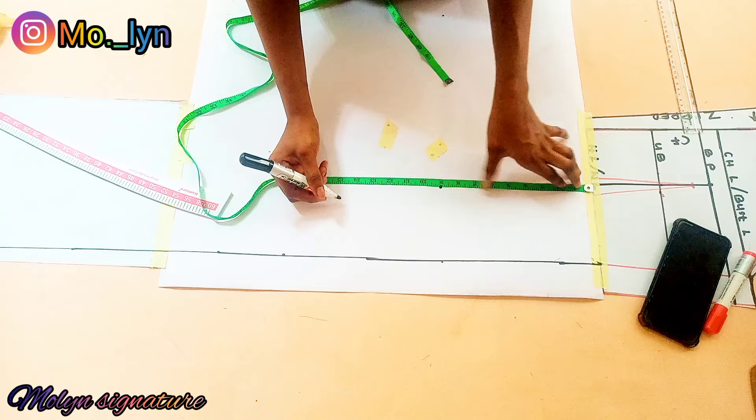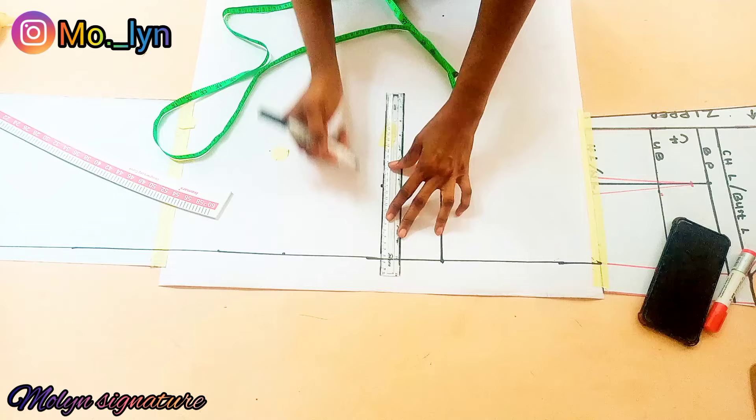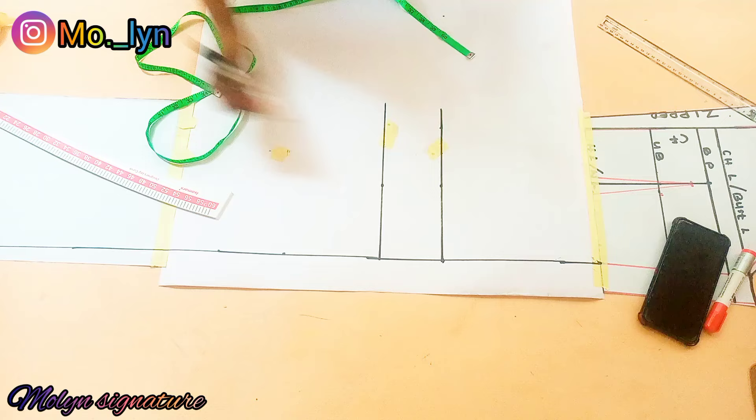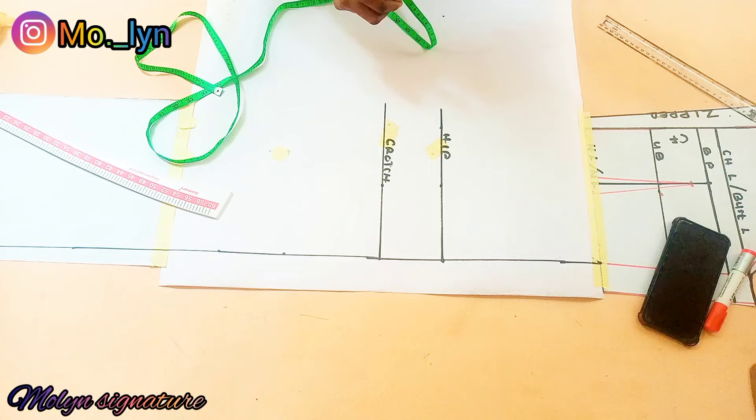After marking the crotch depth I'll use the ruler to connect this. So this is going to be my hip line, and this is my crotch line. The next thing I'm going to do is insert the quarter of my hip circumference on my hip line and on the crotch line as well.